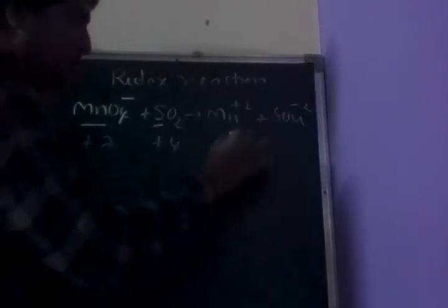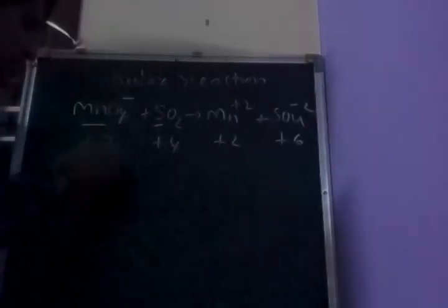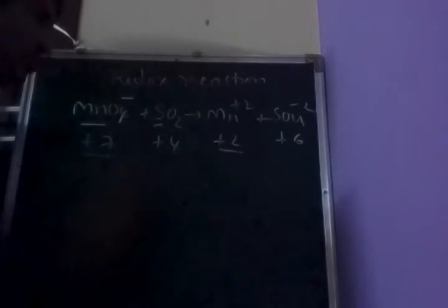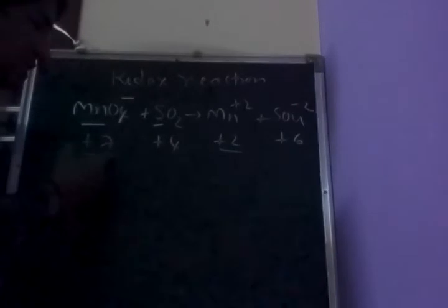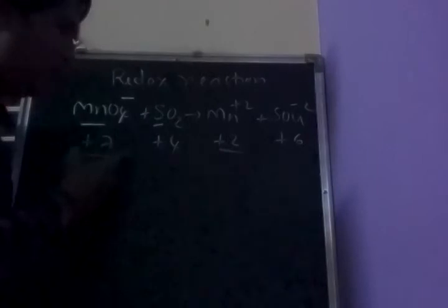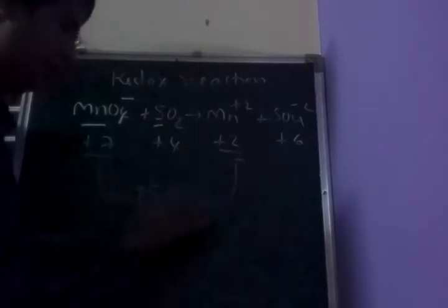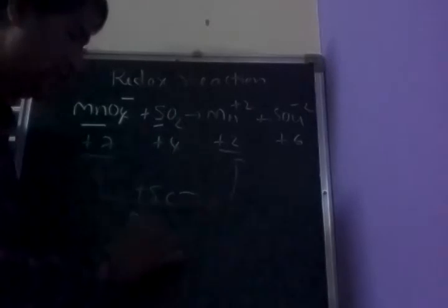Here, Mn oxidation state is plus 7. S oxidation state is plus 4. The oxidation state of Mn changes to plus 2. Plus 7 to plus 2 — that means it gains 5 electrons. Gaining of electrons is reduction. So this one is reduction.